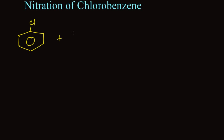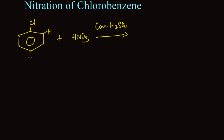Chlorobenzene is going to react with a mixture of concentrated nitric acid (HNO3) and concentrated sulfuric acid (H2SO4). Chlorobenzene is an ortho and para directing group, so there will be a hydrogen in the ortho position as well as in the para position.